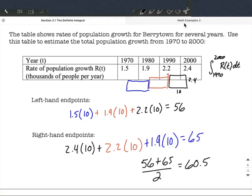So my best guess would be about 60.5, and I guess that's 1,000 people. All right, hope this helps. Good luck.